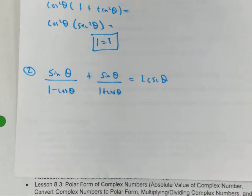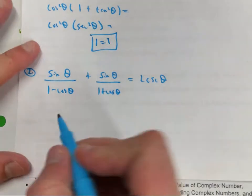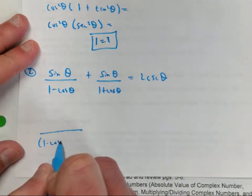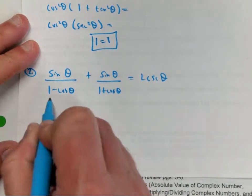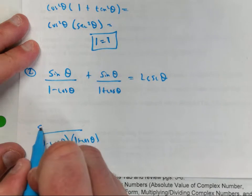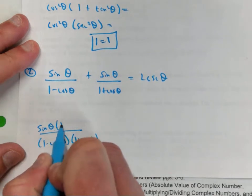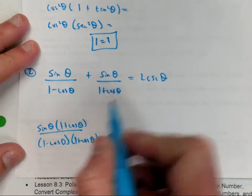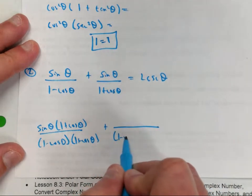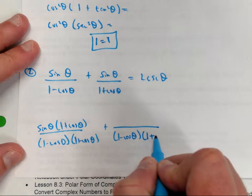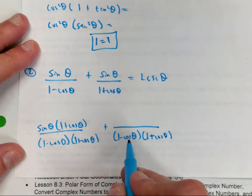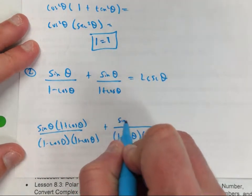Find a common denominator. What would my common denominator be between 1 minus cosine and 1 plus cosine? It would be both of them. This denominator is missing 1 plus cosine, so I'm going to multiply the numerator by that. This one's missing 1 minus cosine, so I'm going to multiply the numerator by that.